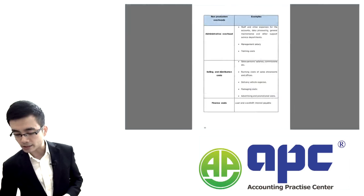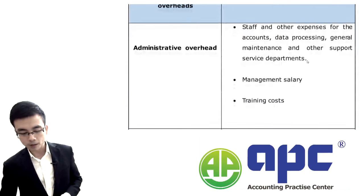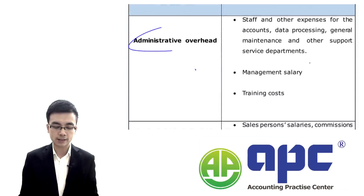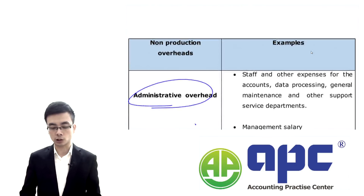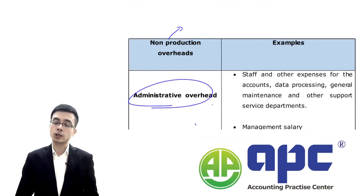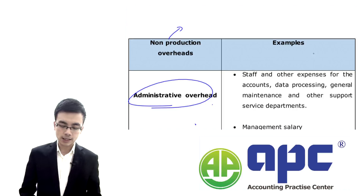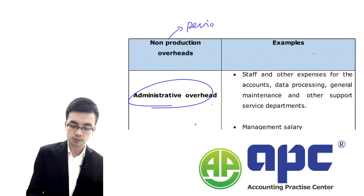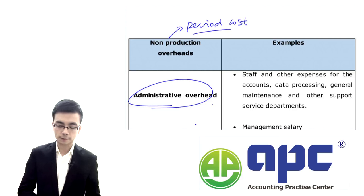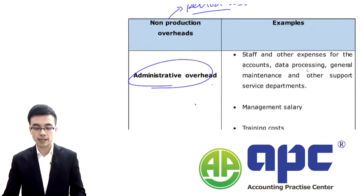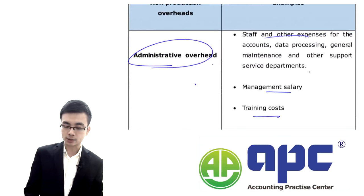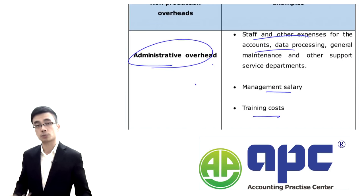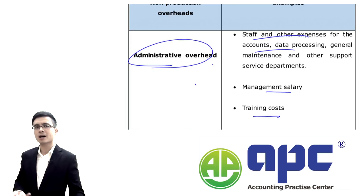For non-production overhead expenses — such as admin overheads — in the statement of profit or loss, all we do is treat them as a period cost. Examples include management salaries, training costs, staff costs for data processing, and bad debt expense related to customers not paying.